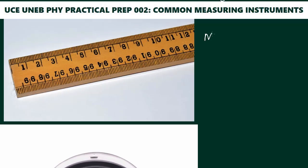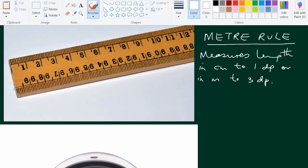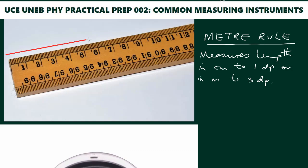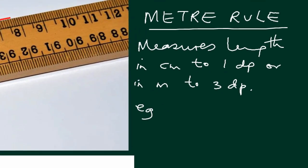Here we're looking at common measuring instruments. The first one is a meter rule, which measures length in centimeters to one decimal place and in meters to three decimal places. For example, if you look at this car length, that's around 7.6 centimeters.